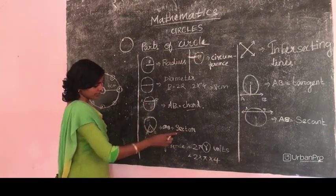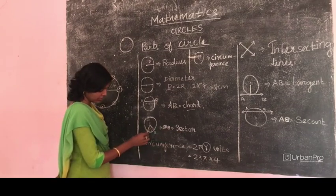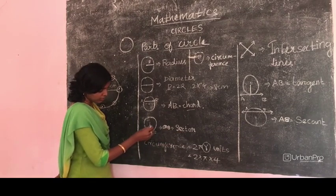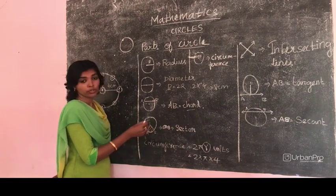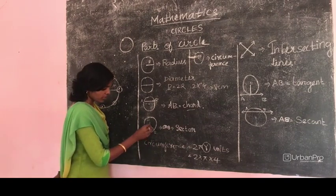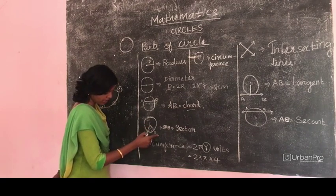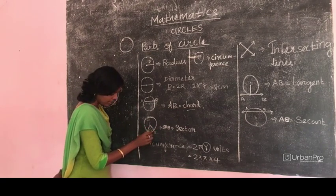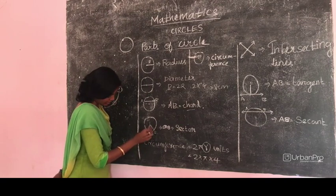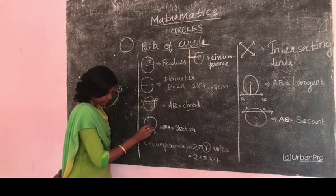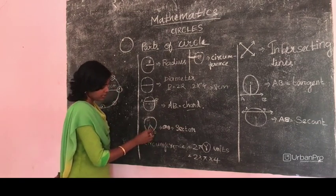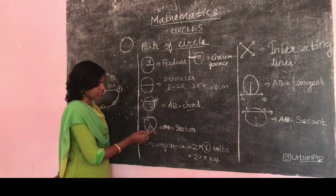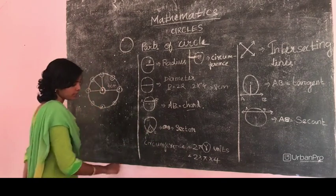Next one: sector. Sector means the region or area in between the radii and an arc. Radii means the plural form of radius. So here are two radii: OA and OB are the radii, and an arc in between them. So the region covered by these radii and an arc is the sector. This small one is the minor sector and the larger one is the major sector.